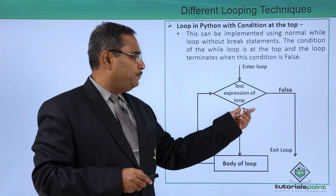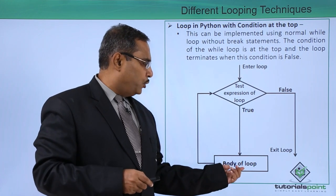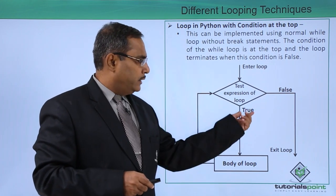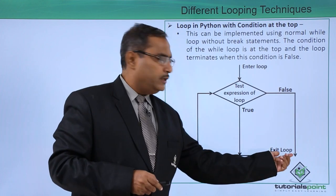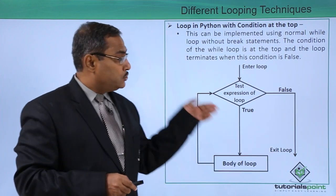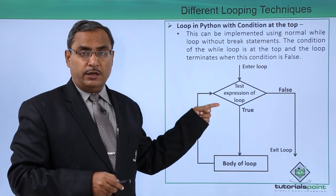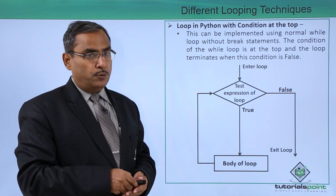Test expression of the loop when the condition is true then the body of the loop will get executed. When the condition is false then it will come out from this loop that is the exit loop. Here you see the placement of the condition is at the top of the loop body.